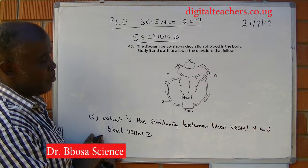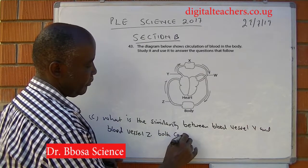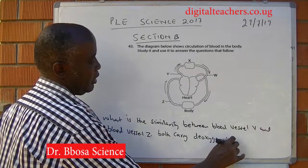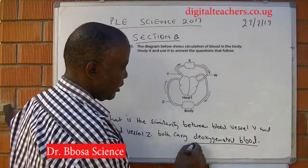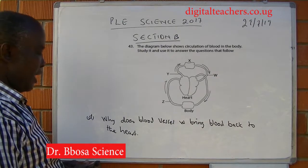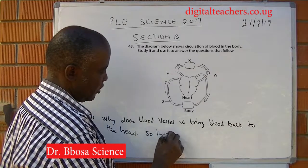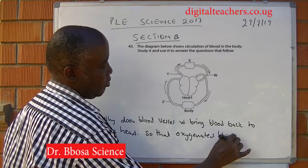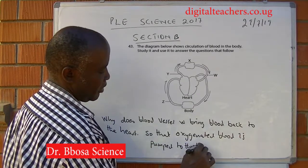What is the similarity between blood vessel Y and blood vessel Z? Both carry deoxygenated blood. Why does blood vessel W bring blood back to the heart? So that oxygenated blood is pumped to the body.